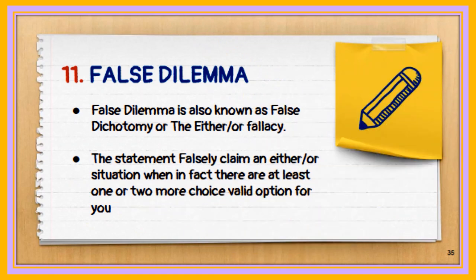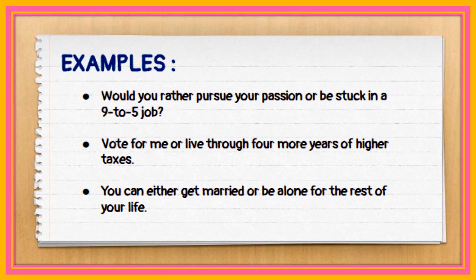Eleventh is the false dilemma, also known as the false dichotomy or the either-or fallacy, wherein the statement falsely claims an either-or situation when in fact there are at least one or two more choices or options available. Examine the following examples of the false dilemma fallacy.